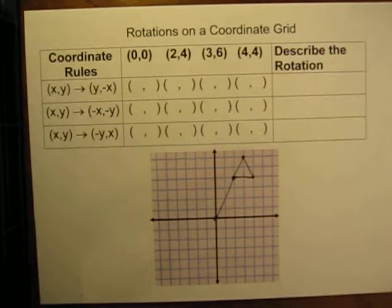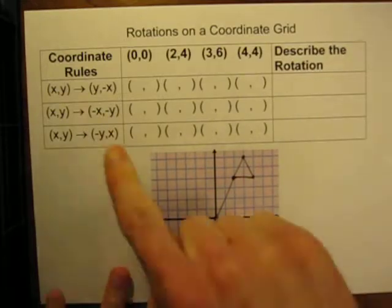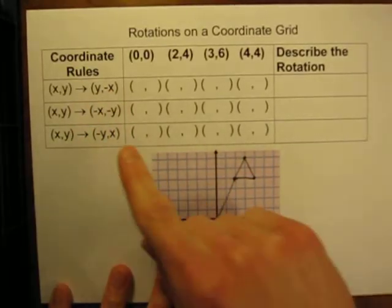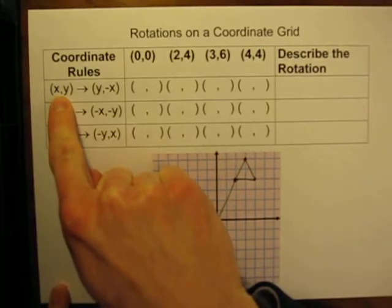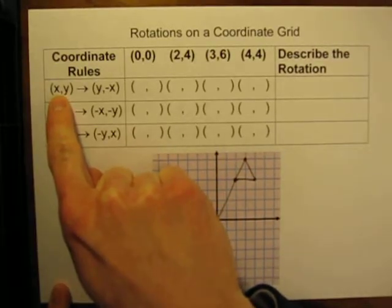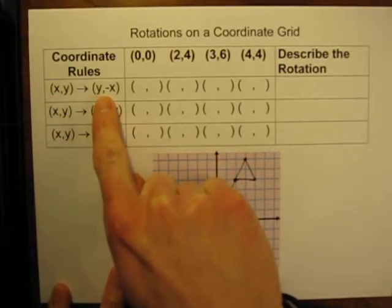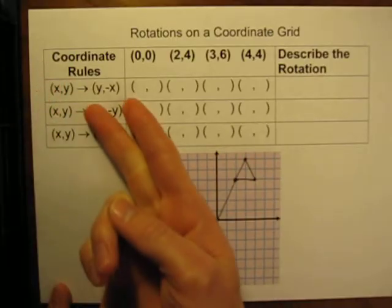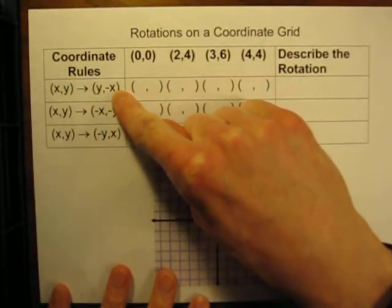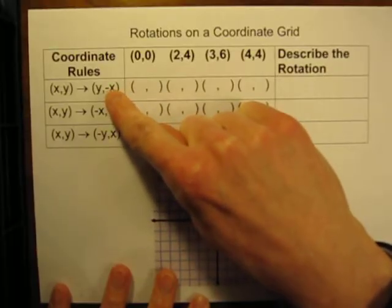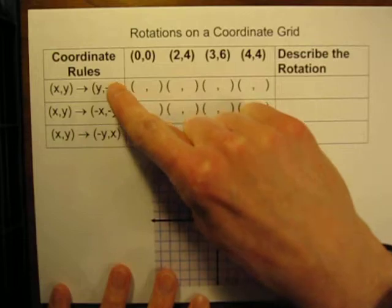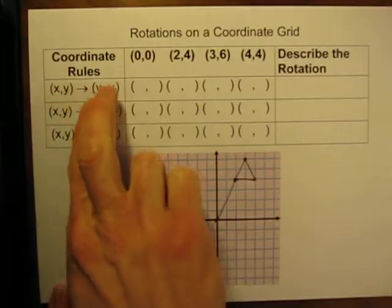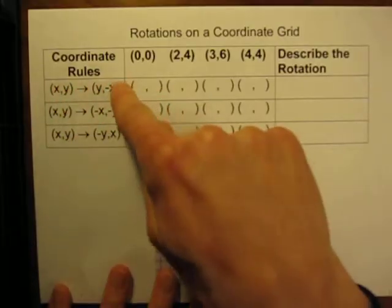I'm going to be rotating it three different times. The rotations are given by these three coordinate rules. The way these are written, if we start with any point (x, y), according to this first rule, we are going to take these two coordinates, reverse their order, and change the sign of the second one. The negative sign doesn't necessarily mean the second point will be negative — it just means we'll change the sign to the opposite of what it was.